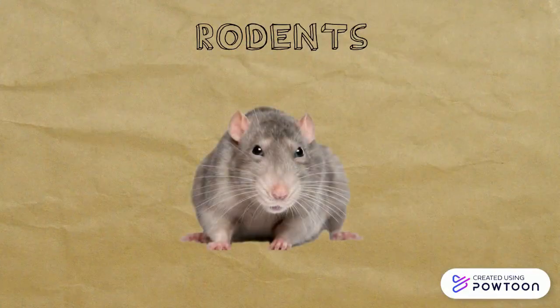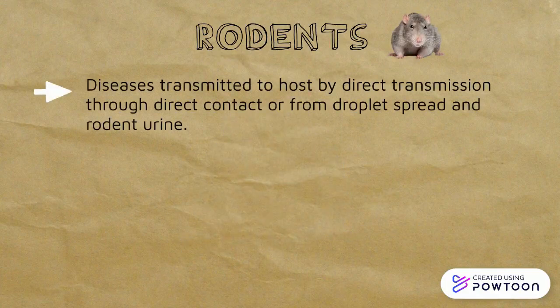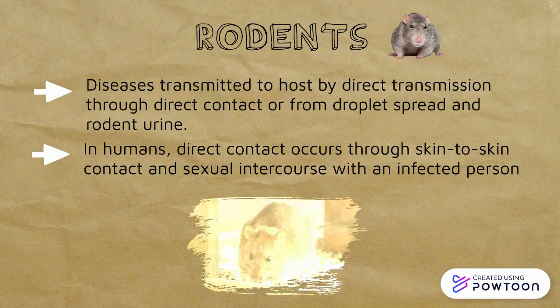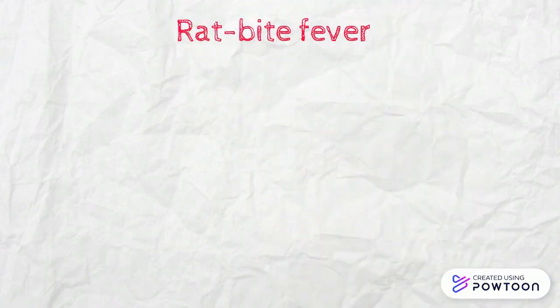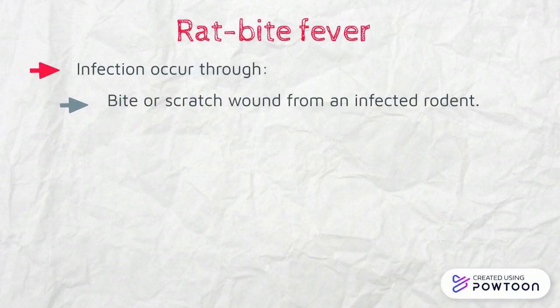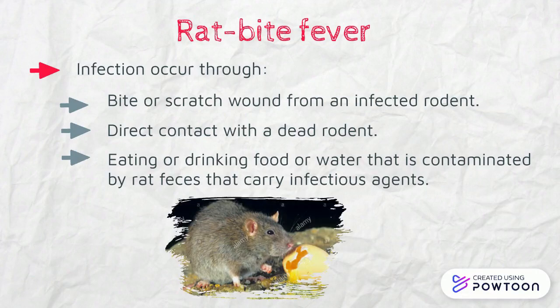First up are rodents. Diseases are transmitted to the host by direct transmission through direct contact or from droplet spread and rodent worry. An example of a disease spread through rodents is rat bite fever. The infection occurs through a bite or scratch wound from an infected rodent, direct contact with a dead rodent, or eating or drinking food and water contaminated by rat feces that carry infectious agents.